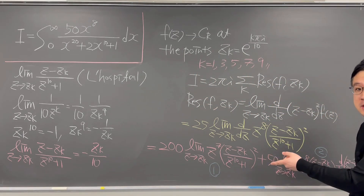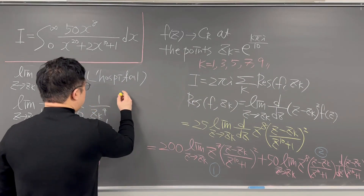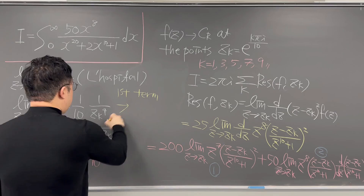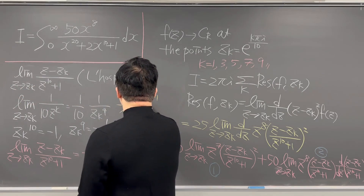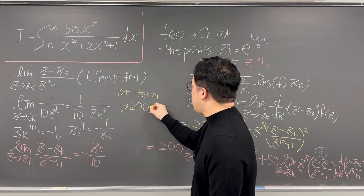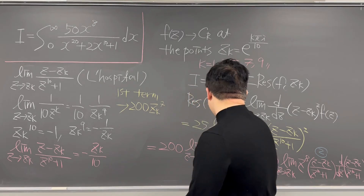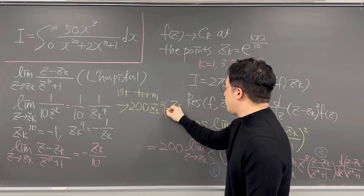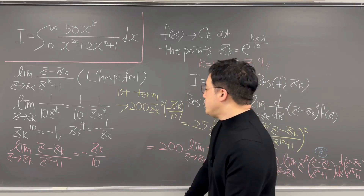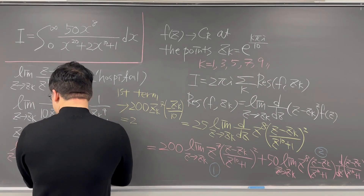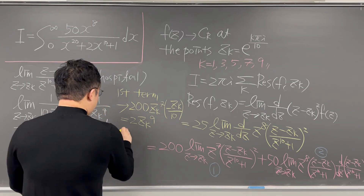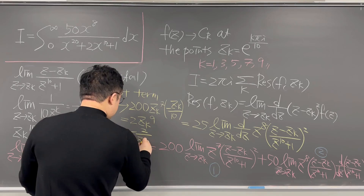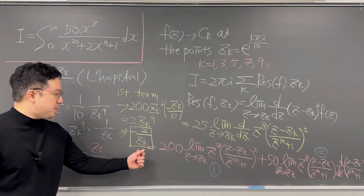Using this, the first term gives us 200 times Z_k to the power of 7 times negative Z_k over 10, which equals 2 times Z_k to the power of 9. So it has to be just equal to negative 2 over Z_k. The first term is negative 2 over Z_k.